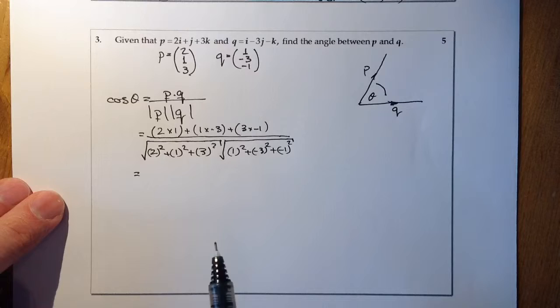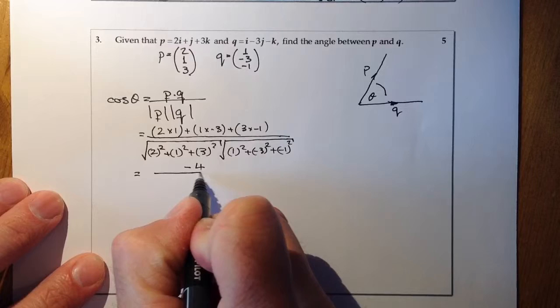So on the top there, I've got 2, I've got minus 3, and plus another minus 3. So that's going to give me minus 4 on the numerator.